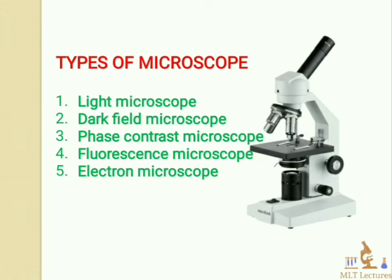The fifth is the electron microscope, invented by Ernst Ruska in 1931. It has more than 10,000x magnification power, which reveals the real structure of very small objects.